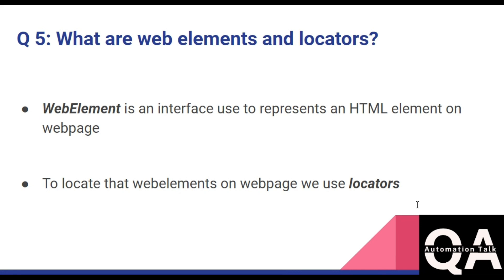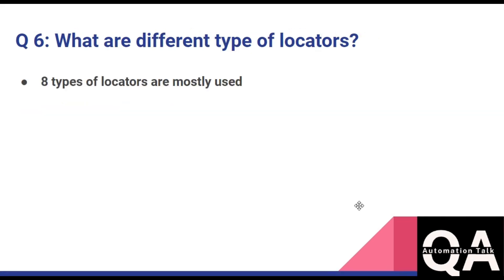The next question is: what are web elements and locators? A web element is an interface used to represent the HTML element on a web page. To locate that web element on the web page, we use locators. These two concepts are interlinked — the web element represents the HTML element, and locators are used to find it.